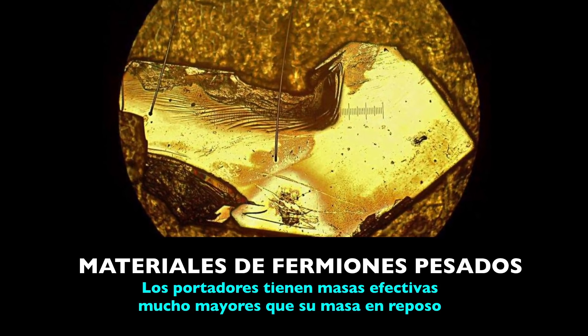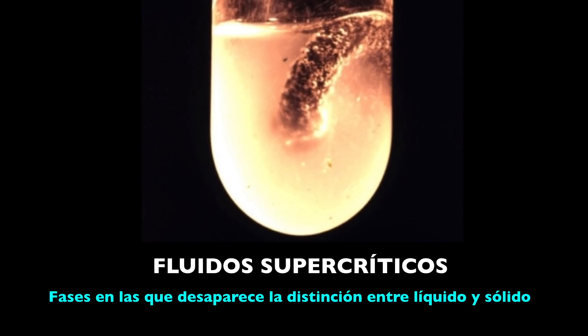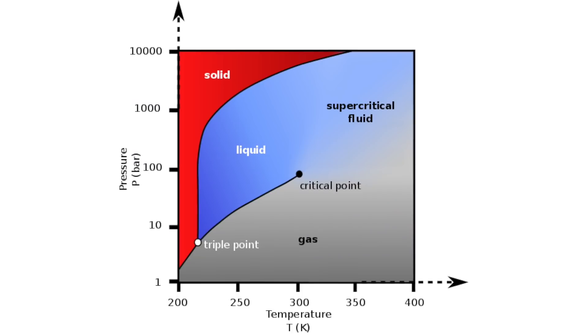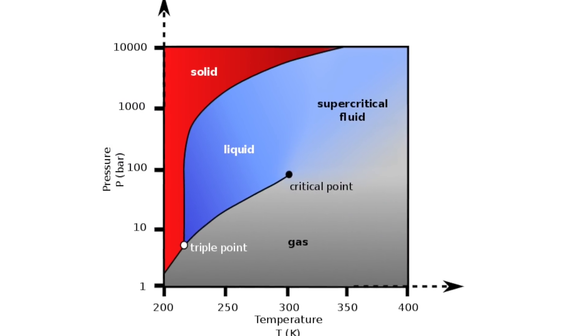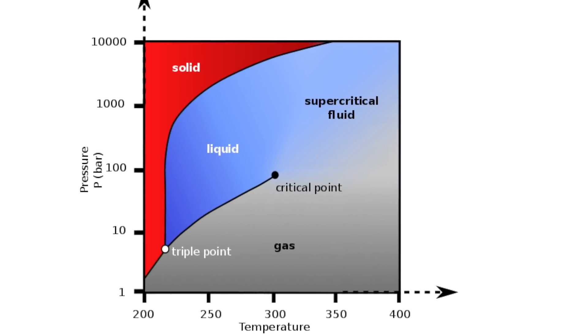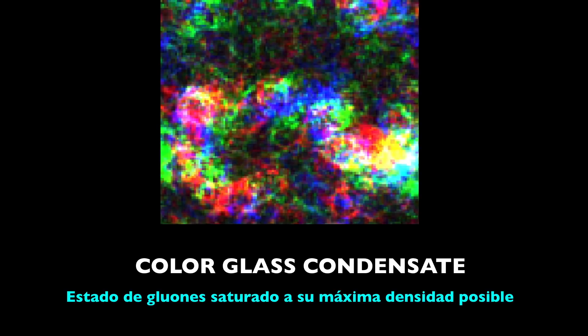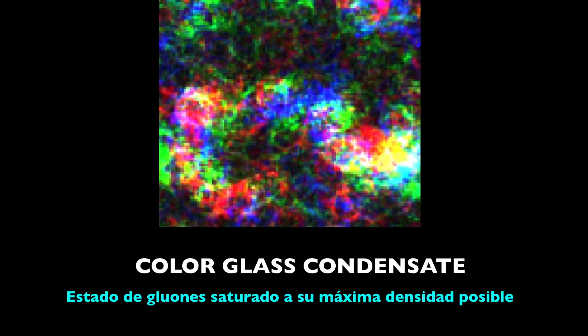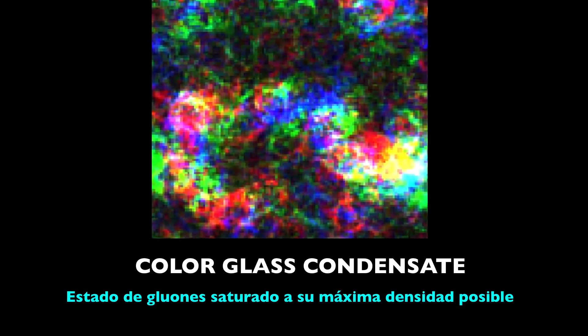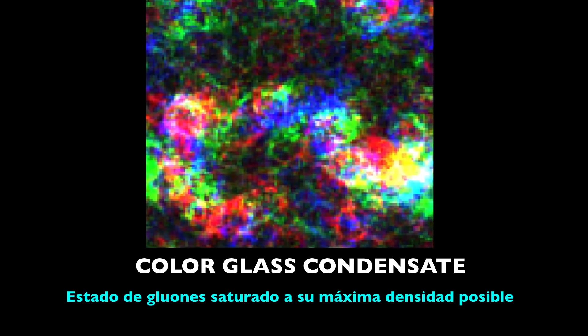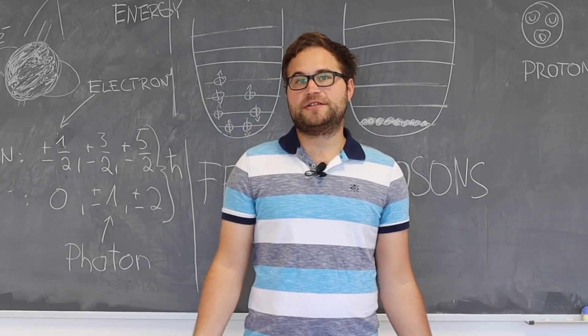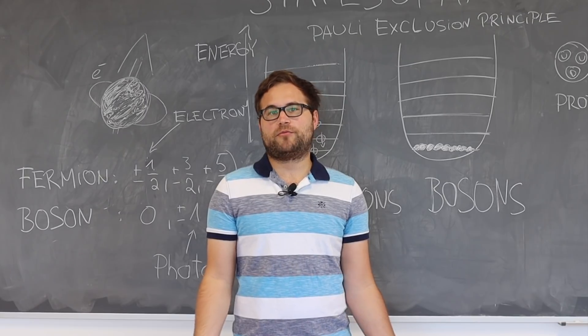Other fascinating states include heavy fermion materials and the supercritical fluid, which is a state at sufficiently high temperatures and pressure where the distinction between liquid and gas disappears. And finally, the color glass condensate, a type of matter theorized to exist in atomic nuclei traveling near the speed of light.